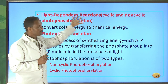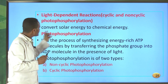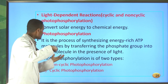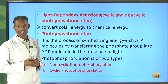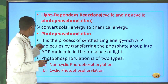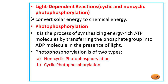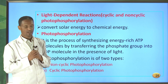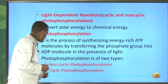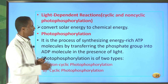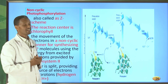In the light-dependent reaction, solar energy is converted into chemical energy. The addition of phosphate takes place — called photophosphorylation — with the help of light energy. Photophosphorylation is the process of synthesizing energy-rich ATP molecules by transferring a phosphate group to ADP (adenosine diphosphate) using light energy. Photophosphorylation is of two types: non-cyclic photophosphorylation and cyclic photophosphorylation.